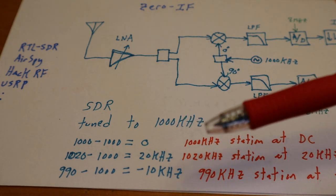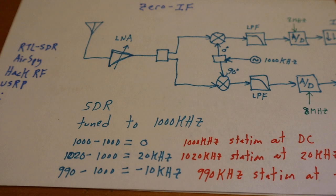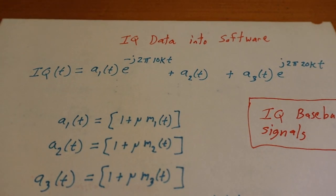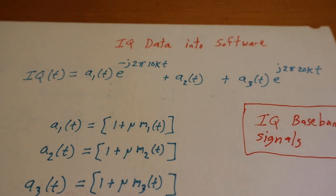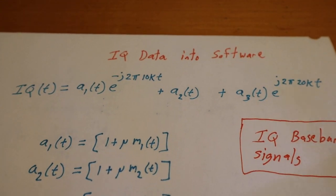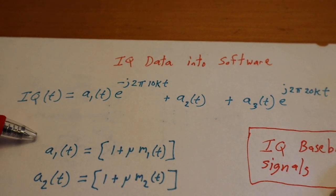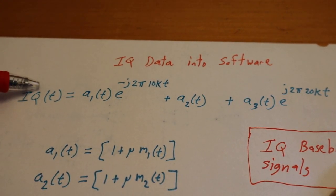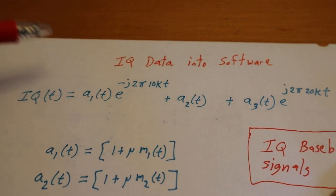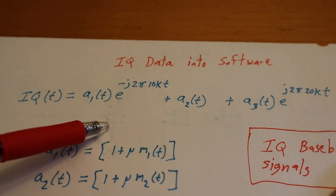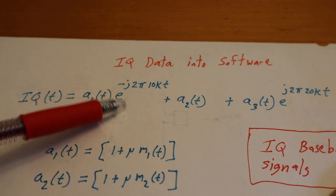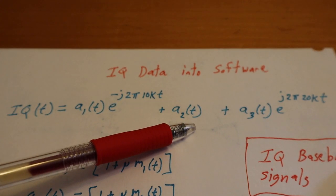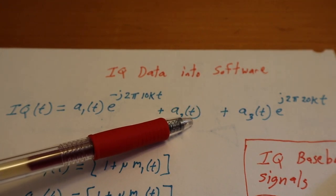Alright, here we go, time for the math. If we look and write the equations—the equations that's going into your SDR software program—here is the equation of the IQ data that's streaming into your SDR software. You got a1 multiplied by this 10 kilohertz complex phasor negative 10, you got a2 (remember he's at DC so his guy here is zero), and then you got a3 and he's multiplied by the 20 kilohertz phasor.